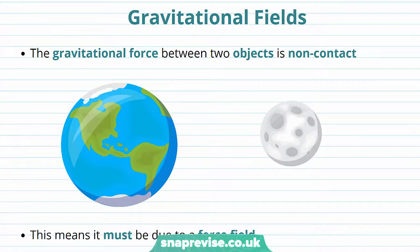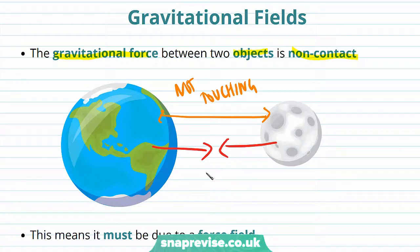Now we're going to discuss the cause of gravity, which is gravitational fields. The gravitational force between two objects is non-contact. So that means that even though the Earth and the Moon are not touching, they still experience a gravitational force of attraction.